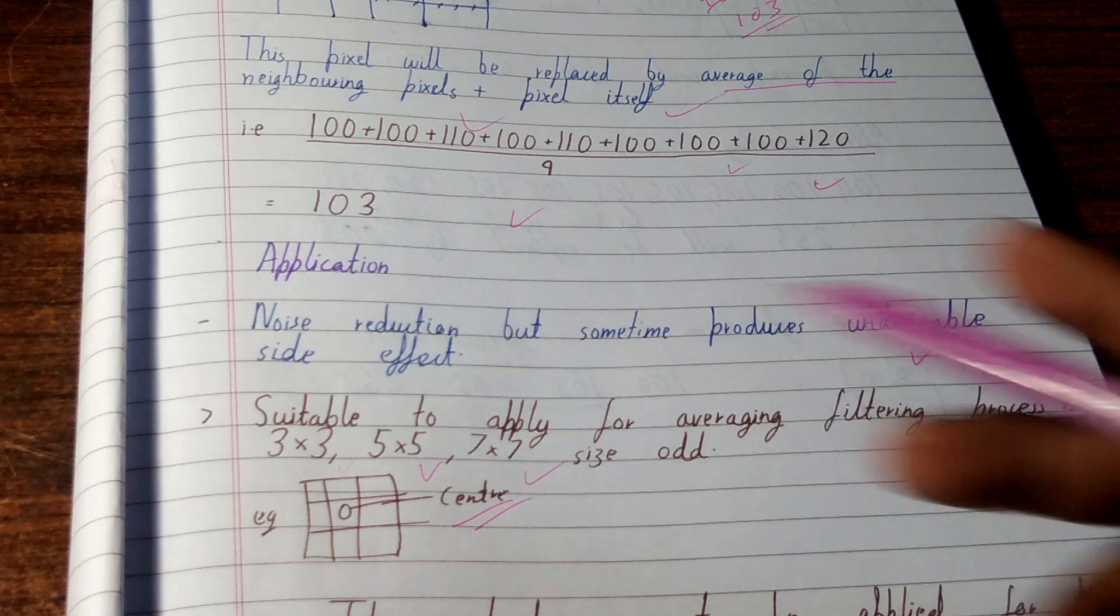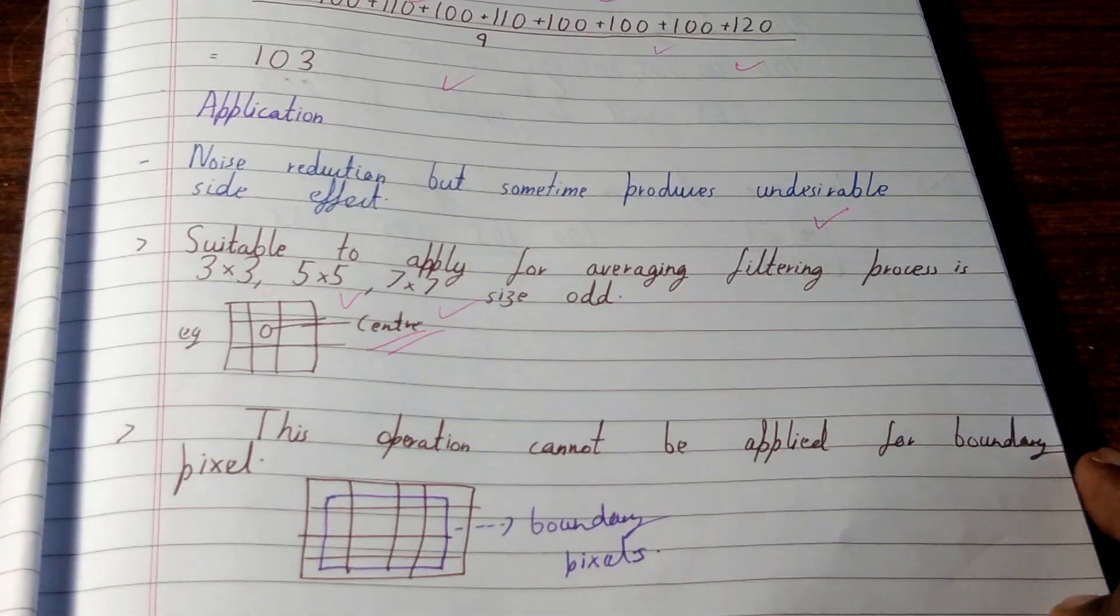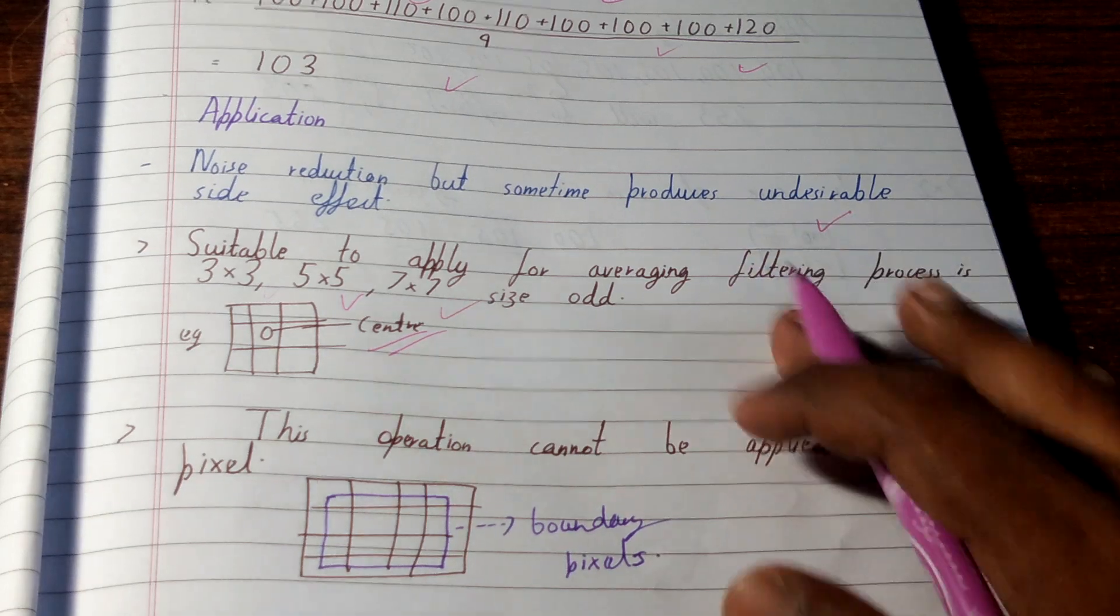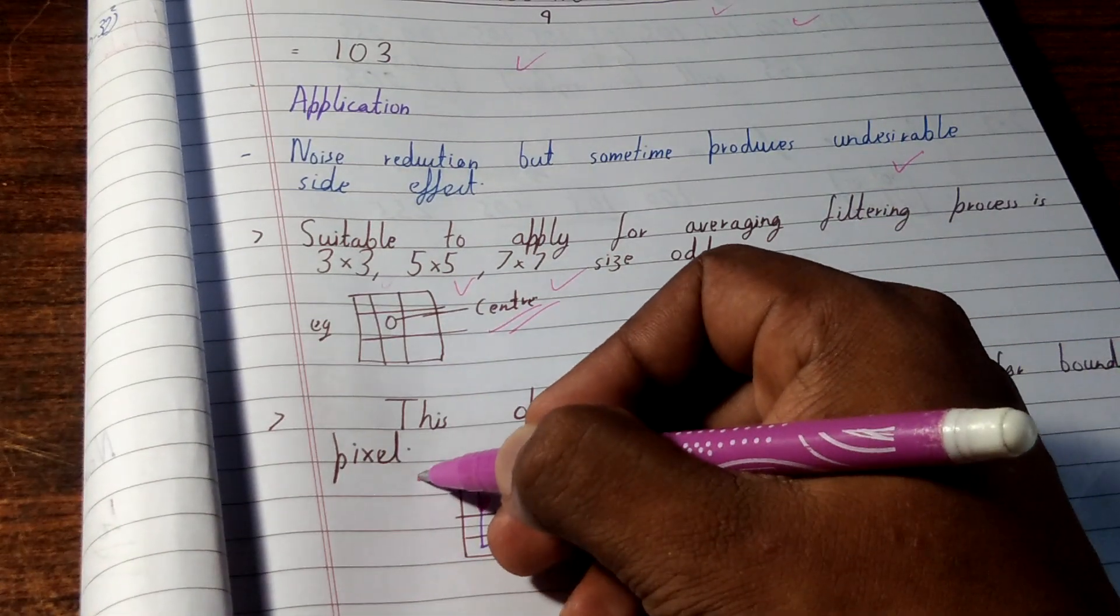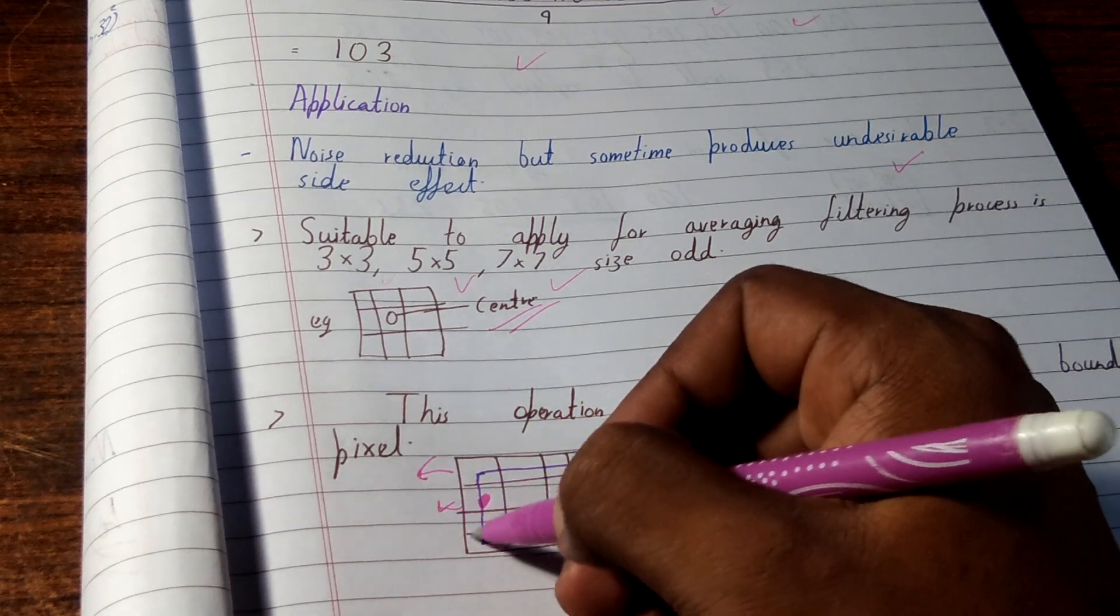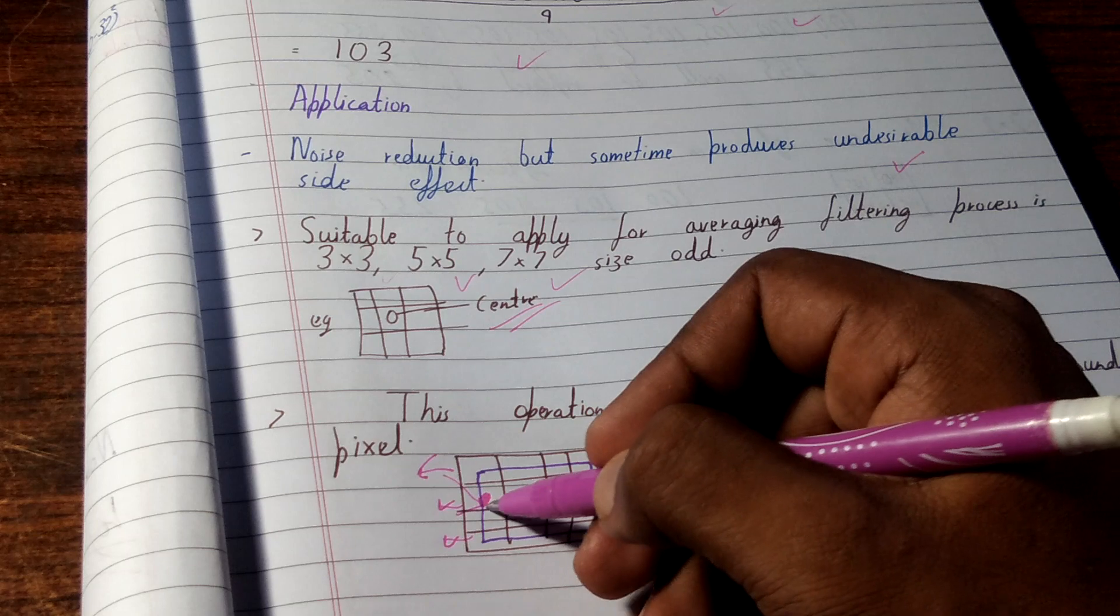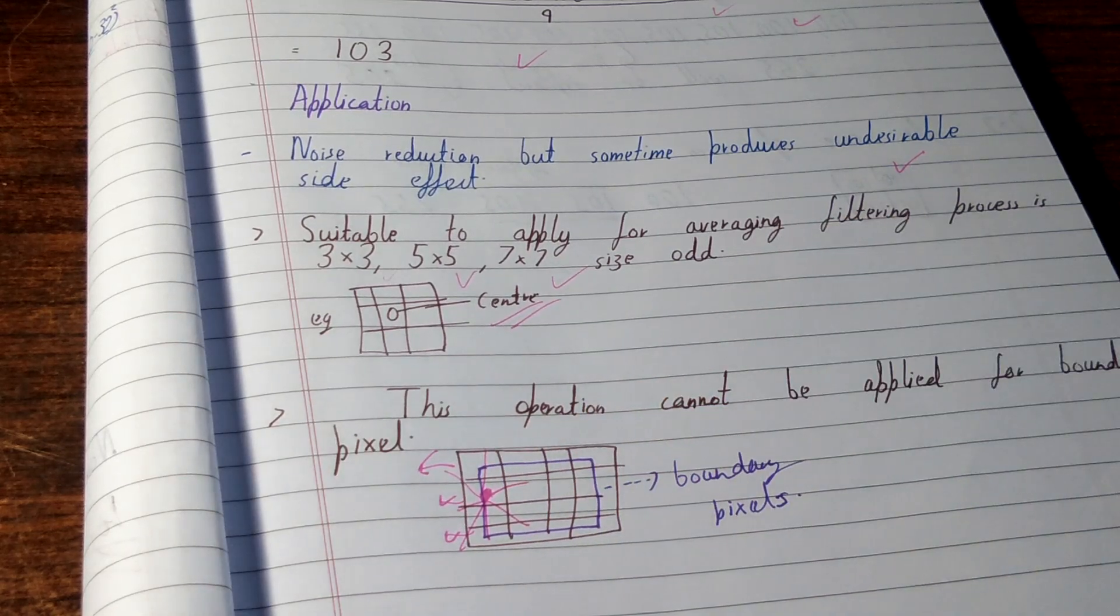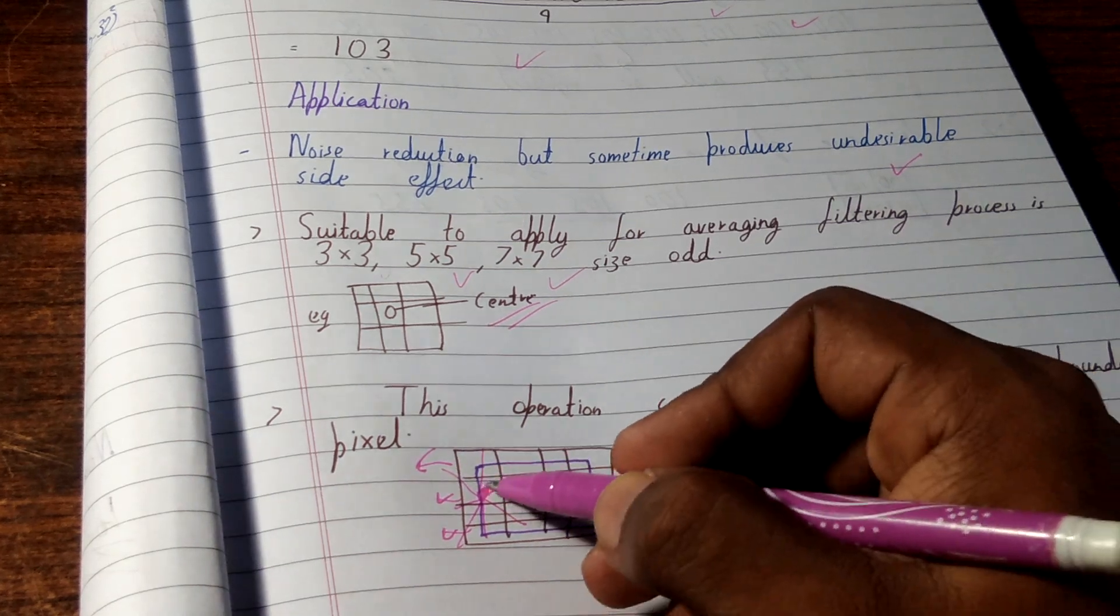So from this you can make out that for boundary pixels this operation cannot be applied. For example, if this pixel is corrupted, then you have to extend till here then only you can take out, because you have to take out the value of all its neighbors. So you have to extend the value to its left, then you can take out the value of a particular pixel, but you can't take it out without extending.